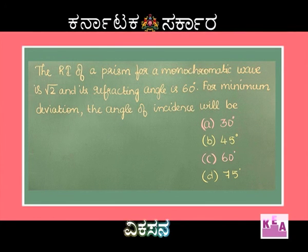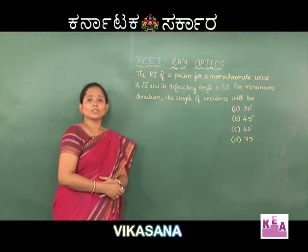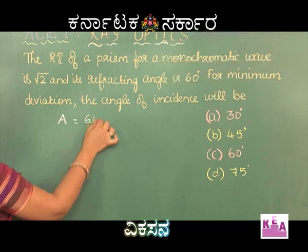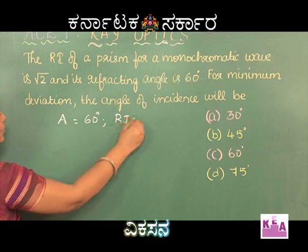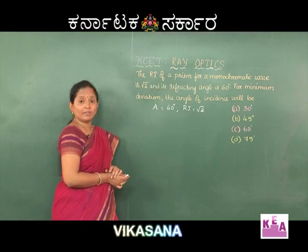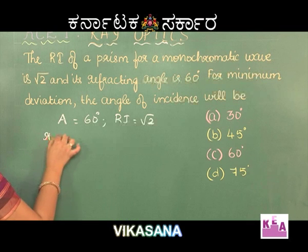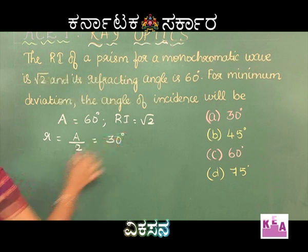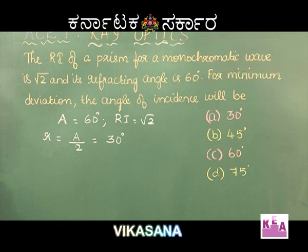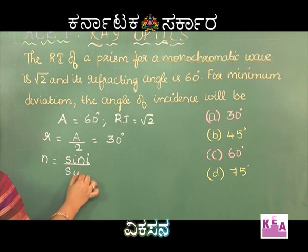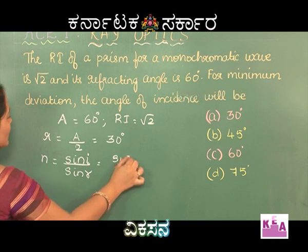Students, in this question they have given the angle of prism as 60 degrees and refractive index as √2. Since it is at minimum deviation, we can write r = A/2 = 30 degrees. We are supposed to find the angle of incidence, so we use Snell's law: n = sin i / sin r.